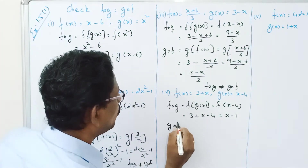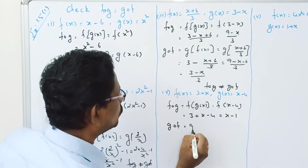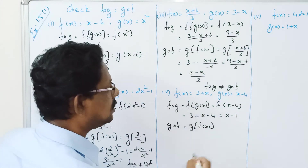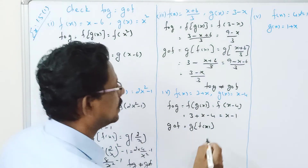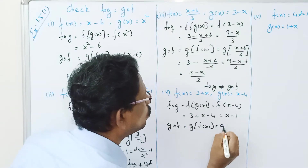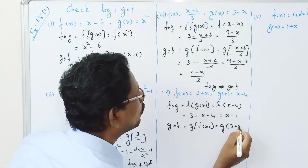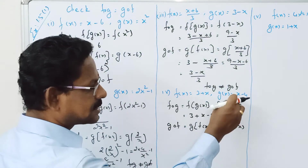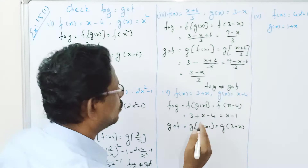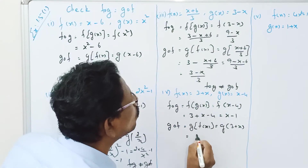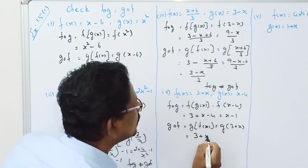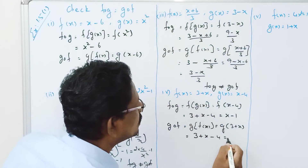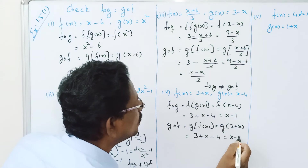Now G composition F — G of F of X — where F of X equals 3 plus X. That is G of 3 plus X, which equals 3 plus X minus 4, giving X minus 1.